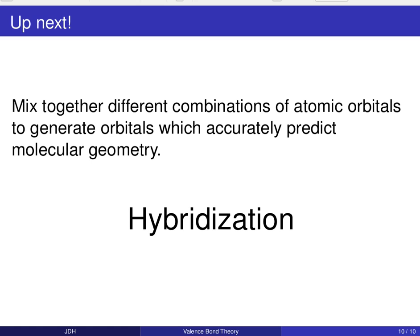And so that's going to bring us to our next video in the sequence here. The answer to that question is, well, we're going to have to actually mix together different combinations of atomic orbitals to generate orbitals, which we're going to call hybrid orbitals, which accurately predict molecular geometries. And so this process is known as hybridization and stay tuned for the next video. We'll go into a lot of detail on hybridization and how to use it, what it is, how to use it, how to solve problems.